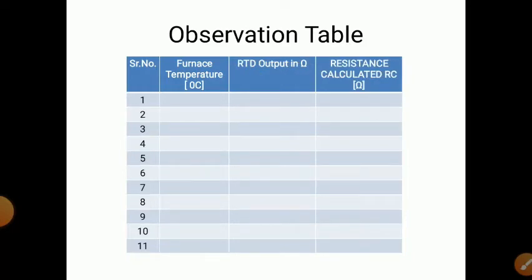A second observation table is required for RTD. The first column is furnace temperature in degrees Celsius and the second column is RTD output in ohms, since as temperature increases resistance increases. A third column shows the theoretically calculated resistance (RC), which should match the experimental readings. Readings are taken at 10-degree intervals from 10 up to 100 degrees Celsius.